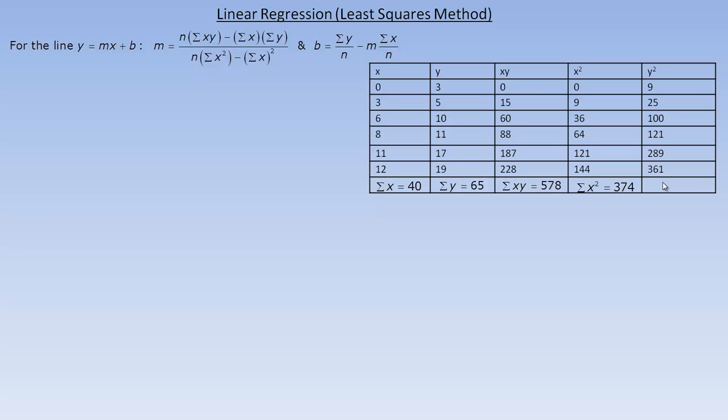Now, this last column, we actually don't need it for either of these formulas. I'm going to show you how to do the coefficient of determination as well. If you're only doing the linear regression line, you wouldn't need this last column. The sum of all the y squareds: 3 squared is 9, 5 squared is 25, 10 squared is 100, down to 19 squared is 361. We add all those up, and the sum of all the y squareds is 905.